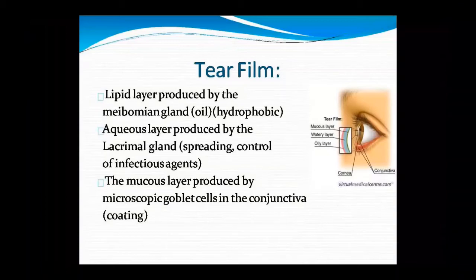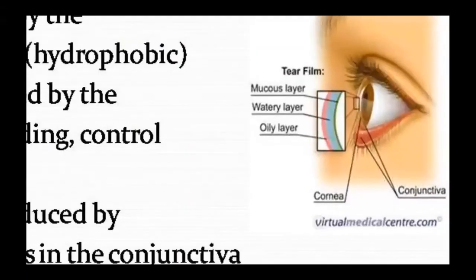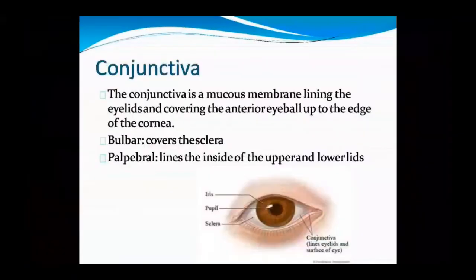The lipid layer is hydrophobic in nature. The tear film coats the cornea and conjunctiva. You can see in the diagram the mucus layer at the base, the water layer in the middle, and the oily layer on top.